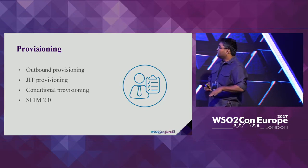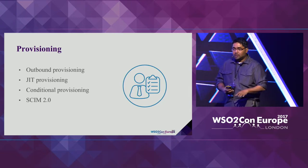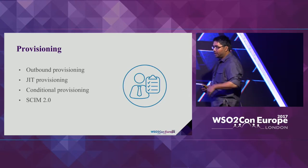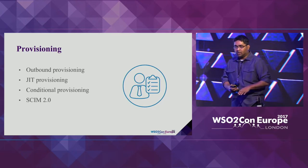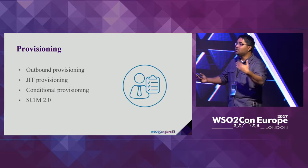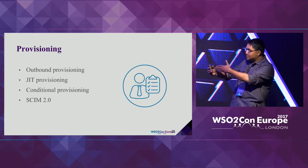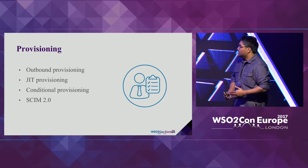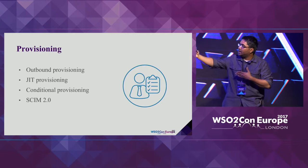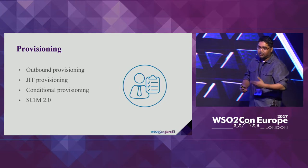With IS 5.2.0 we shipped SCIM 1.1 out of the box. SCIM 2.0 is the latest version, and with IS 5.3.0 we have a connector in our connector store you can download and install for SCIM 2.0 support, though currently it is inbound only. Inbound means an application can provision users to Identity Server using the SCIM API — we support both SCIM 1 and SCIM 2 for inbound. Outbound means Identity Server provisions users to external systems like Salesforce or Google Apps. We don't have a SCIM connector for outbound yet, but we are working on that.